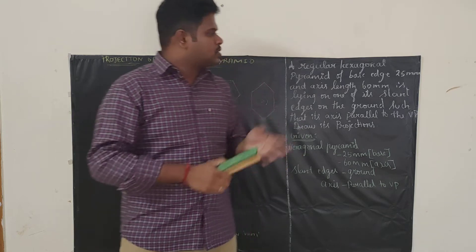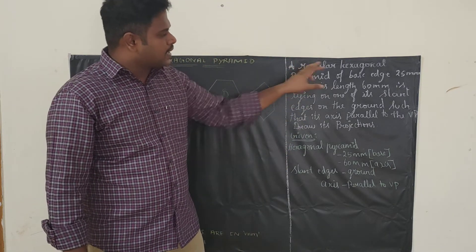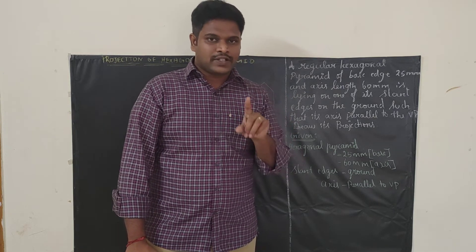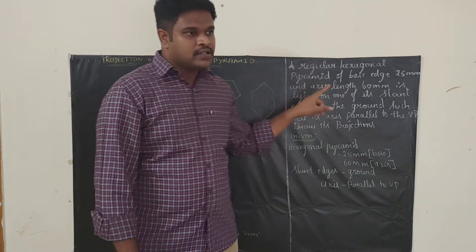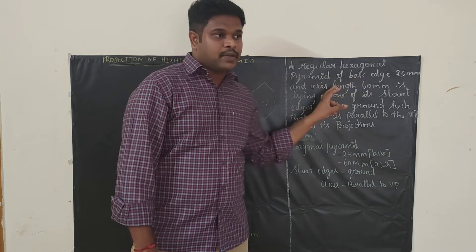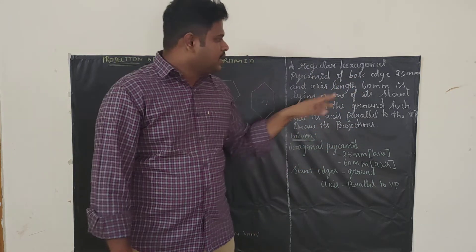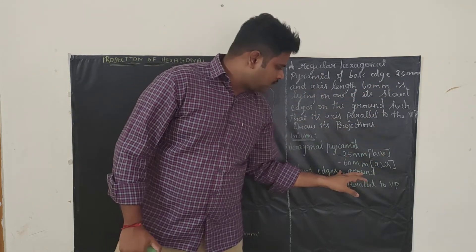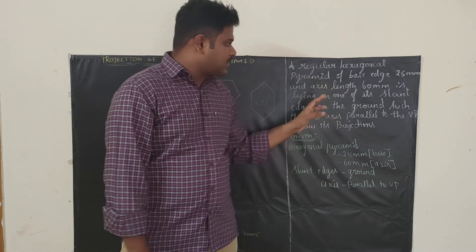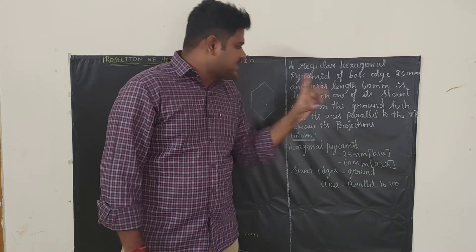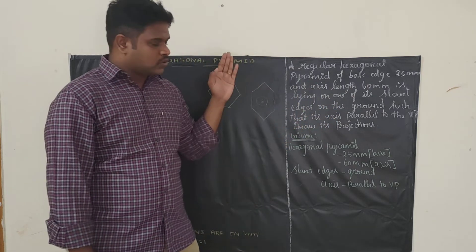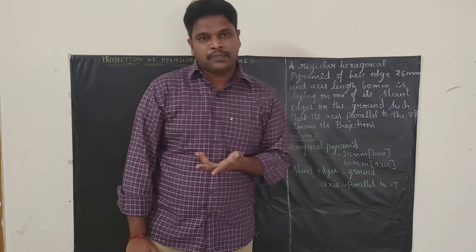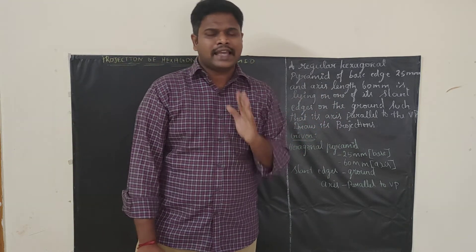The problem gives us a regular hexagonal pyramid. The first thing which should come to our mind is what kind of solid we are going to draw. The solid here is a regular hexagonal pyramid, so we need to draw a hexagon. It has a base edge of 25 mm, so each side of the hexagon is 25 mm, and the axis length is 60 mm. The pyramid is lying on one of its slant edges on the ground, such that its axis is parallel to VP.